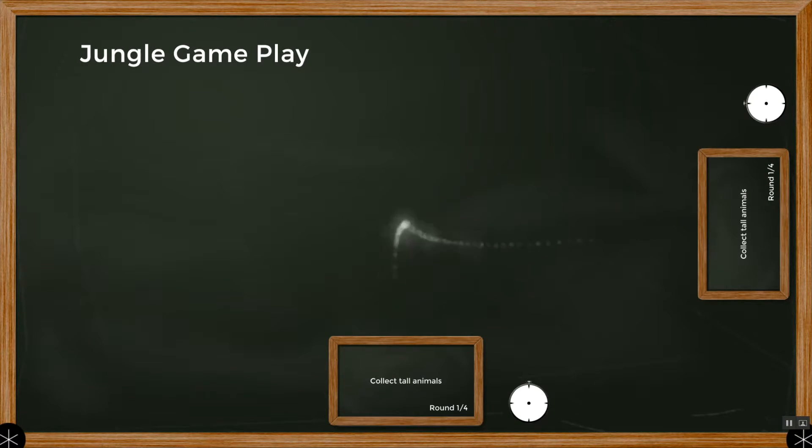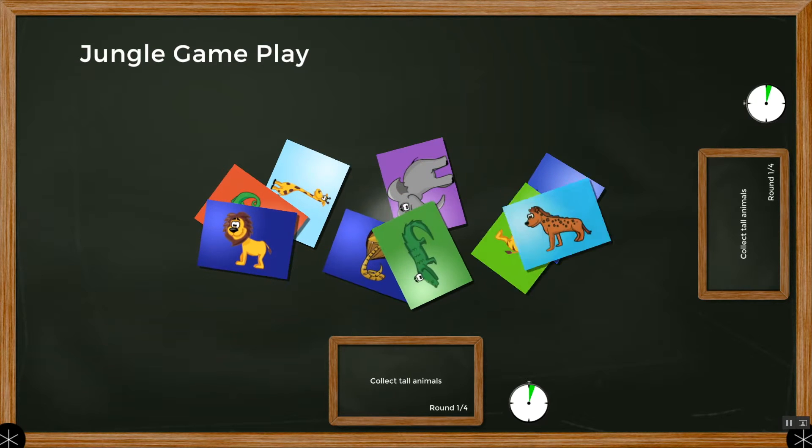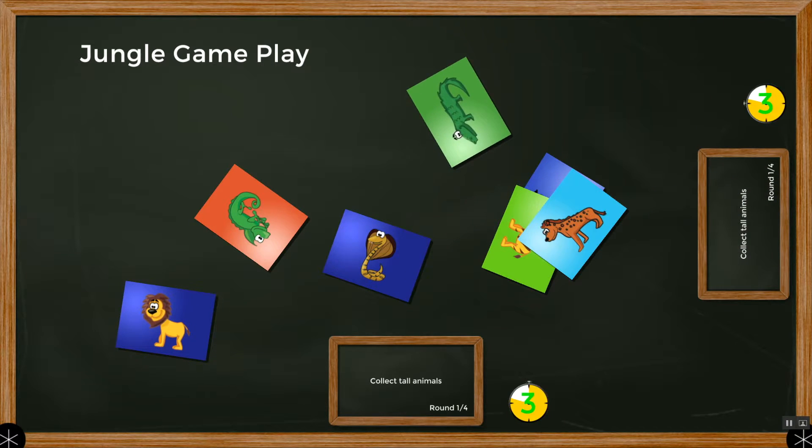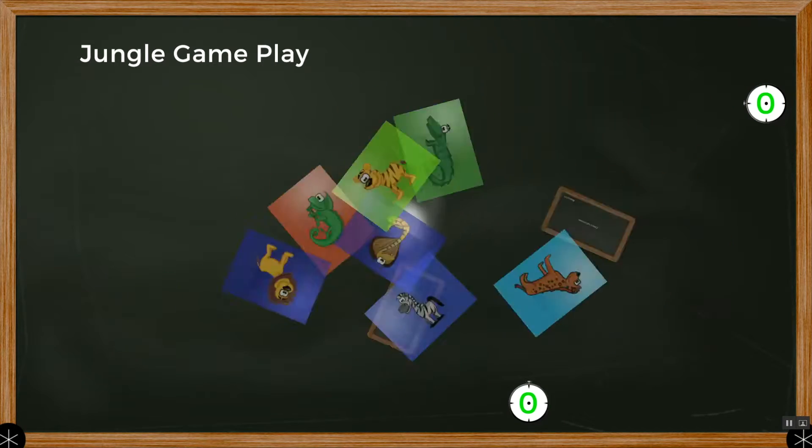In Einstein, answer tiles are scattered randomly about the screen for each round. The goal is to select the correct tiles and drag them to the question boxes at the edge of the screen before the time runs out.